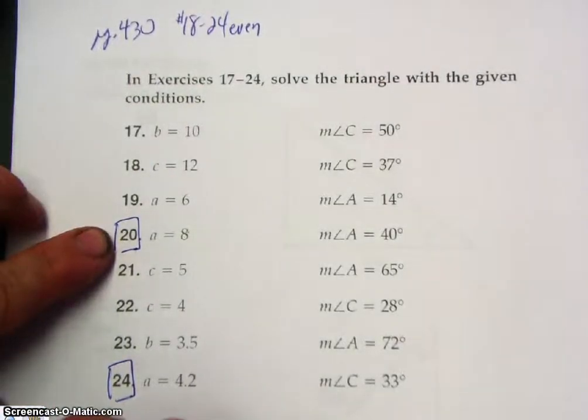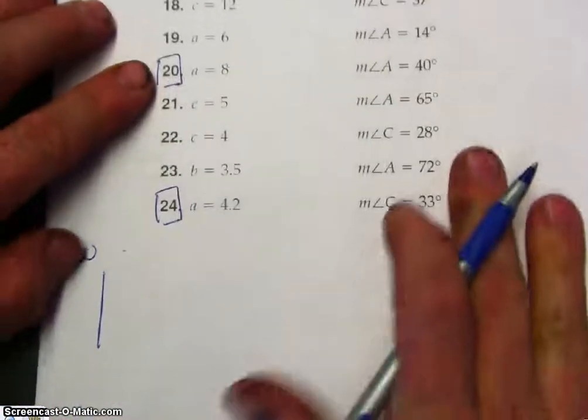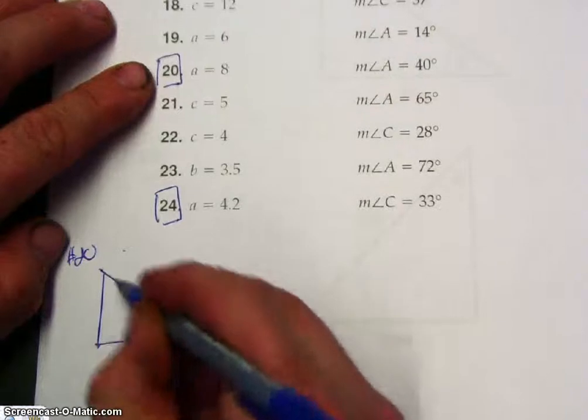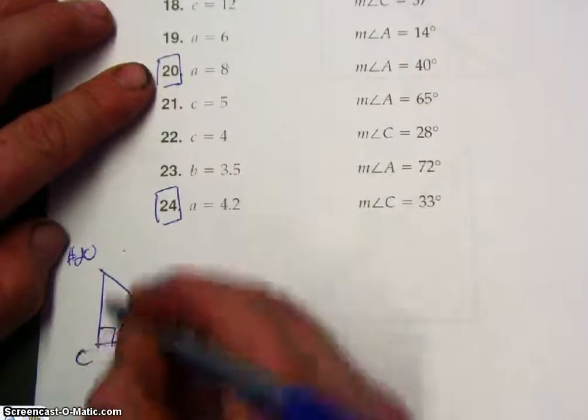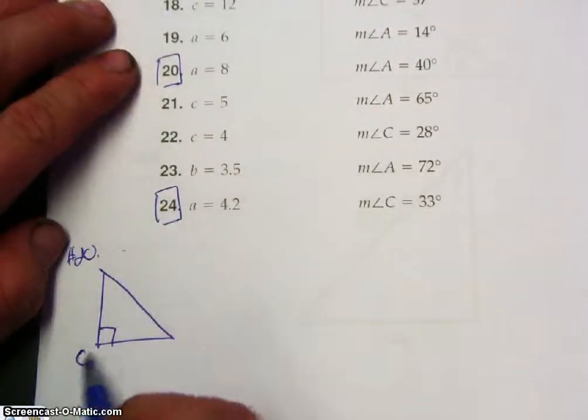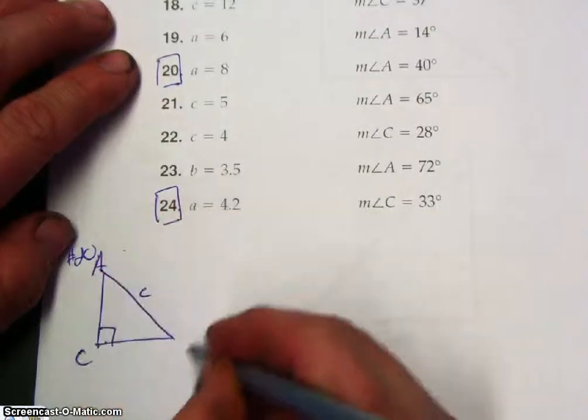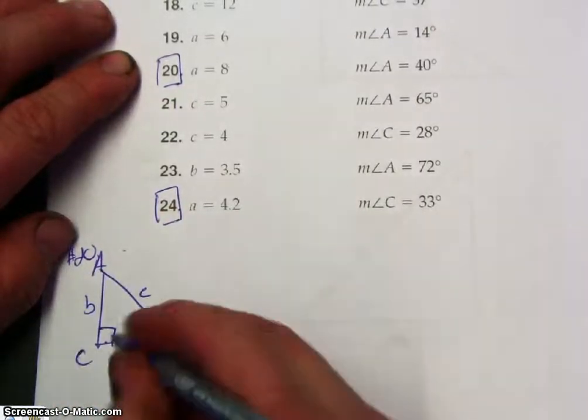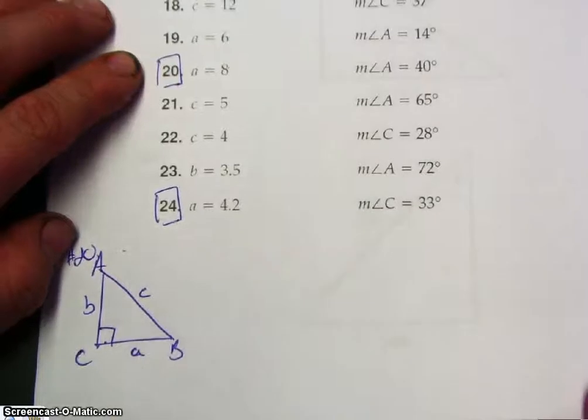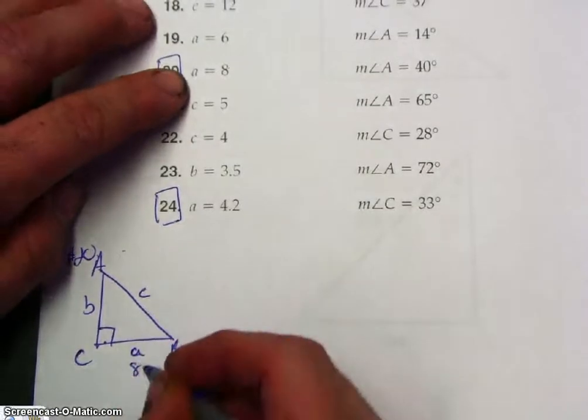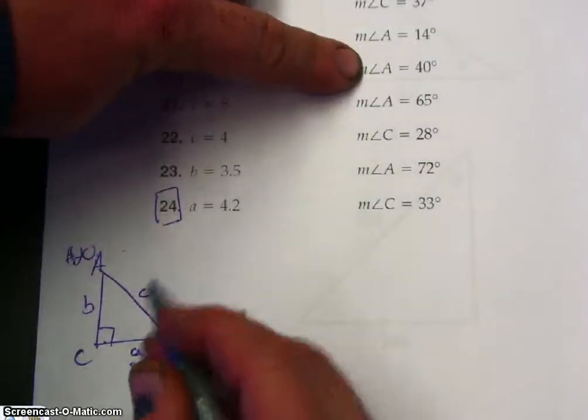The first thing you want to do is draw a triangle, label it. Remember, angle C is always the right angle, side C is opposite. A and B, it does not matter where you put them. All right, so A is 8, angle A is 40.